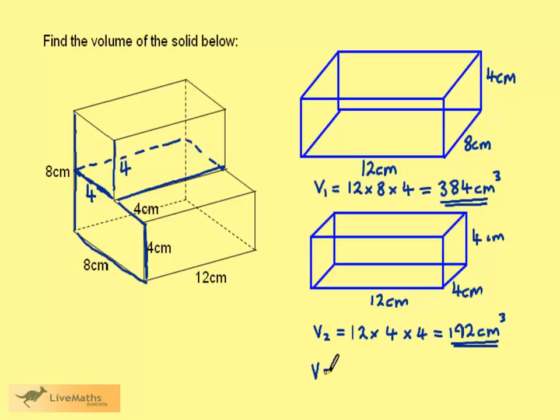The volume for the entire shape then is going to be volume 1 plus volume 2, which is 384, plus 192, giving us 576 cm cubed.